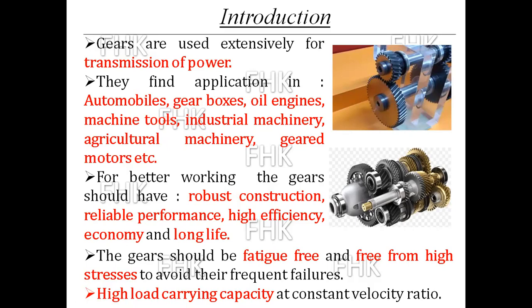Gears are always used in pairs. One is a bigger gear, and this bigger gear meshes with a smaller gear known as a pinion. Just like belt drive has two pulleys — one smaller and one larger — and chain drive has a sprocket and chain assembly with one bigger and one smaller sprocket, the same applies here. For different velocity ratios, the size of both gears is different: one smaller is called the pinion and the larger diameter one is called the gear, so that you can transmit power at different velocity ratios.